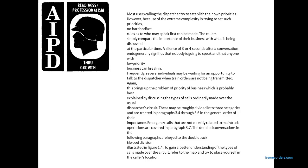Callers simply compare the importance of their business to what is currently being discussed. A silence of three to four seconds generally signifies that no one is about to break in with low-priority business. When several individuals are waiting to talk to the dispatcher while train orders are not being transmitted, this brings up the problem of call priority. Calls are roughly divided into three categories treated in paragraphs 3-4 through 3-6.